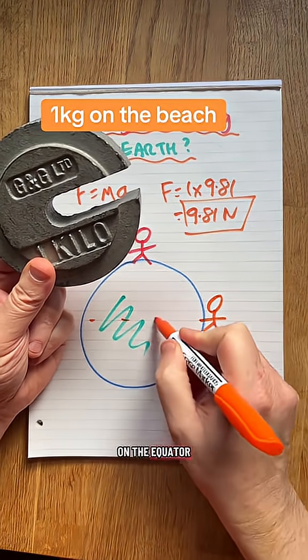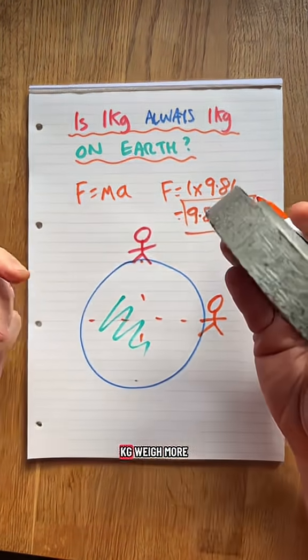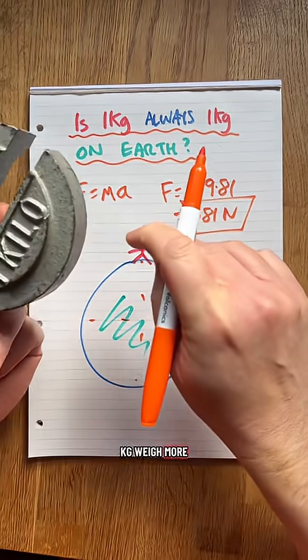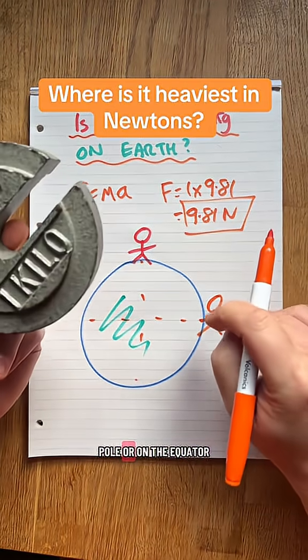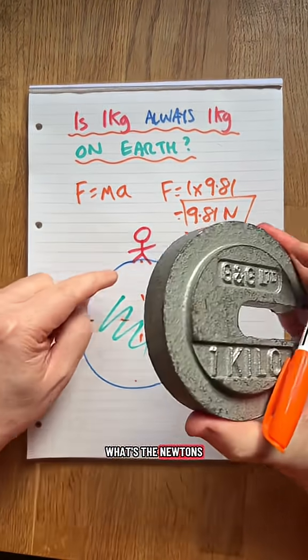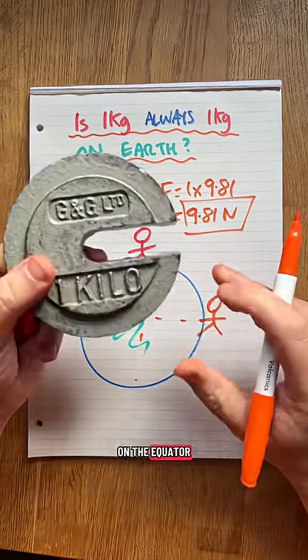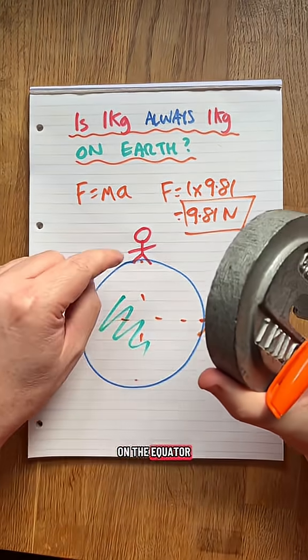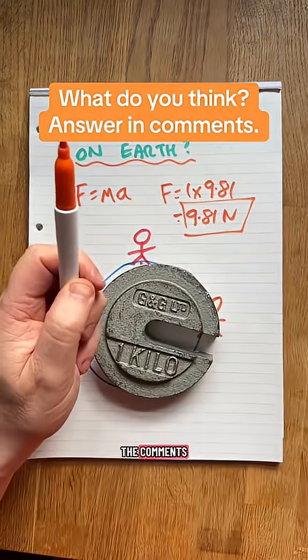The question is, does this one kilogram weigh more on the North Pole or on the equator? What's the Newtons on the North Pole? What's the Newtons on the equator? Are you lighter on the equator or on the North Pole? Answers on a postcard or in the comments.